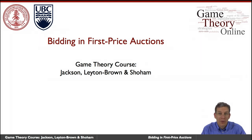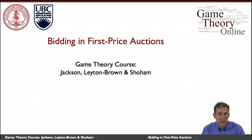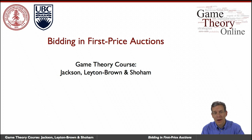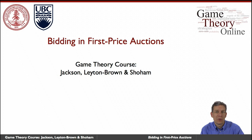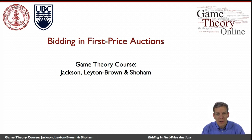Let's talk about first price auctions and bidding in them. In second price auctions, there's a wonderful property from Vickrey-style arguments: people have a dominant strategy to bid their true valuation. Since they can't affect the price, all they can do is affect whether they're getting the good or not, and they want to get the good when their value is above the next highest bid.